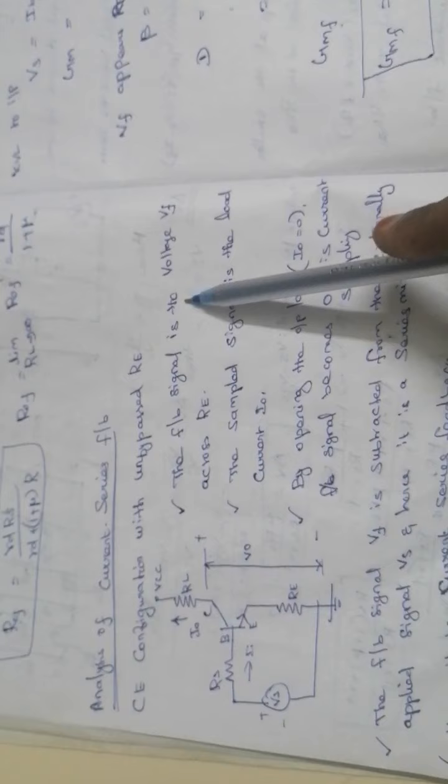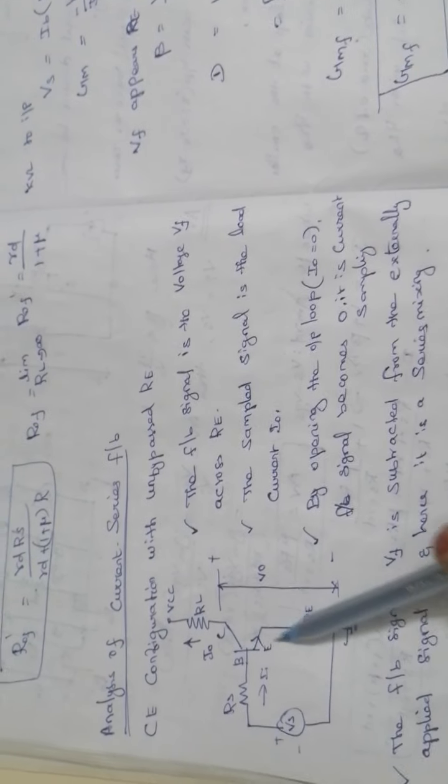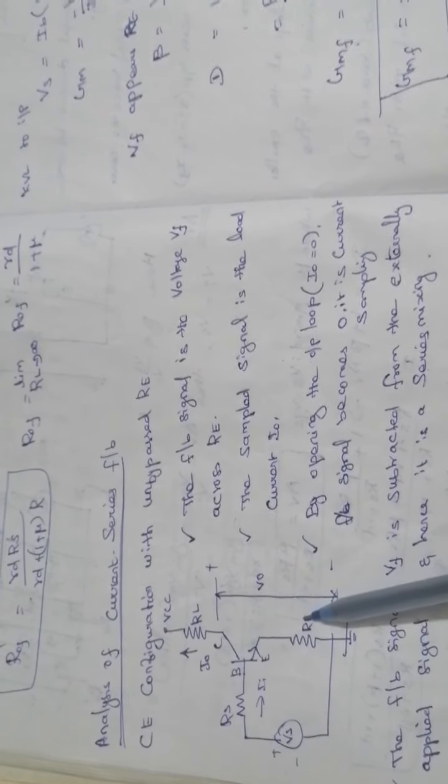We can conclude that the given circuit is current series feedback. The feedback signal is the voltage Vf across Re. The feedback voltage is across the Re resistance. The sampled signal is the load current I0; by opening the output loop, I0 becomes 0 and the feedback signal becomes 0 — this confirms current sampling.